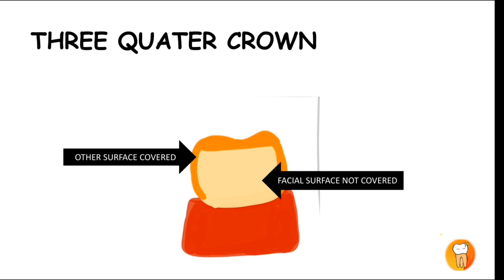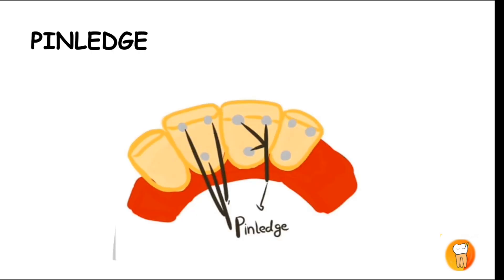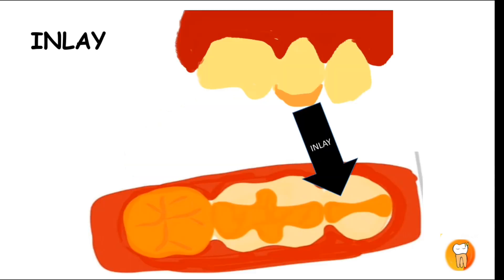In the three-quarter crown, the facial surface — indicated by the arrow — is not covered, but all other surfaces are covered. This is why it is called a partial veneer crown. The next type is the pin ledge crown, which is also a partial veneer crown where pin holes are incorporated into the lingual surfaces for retention.